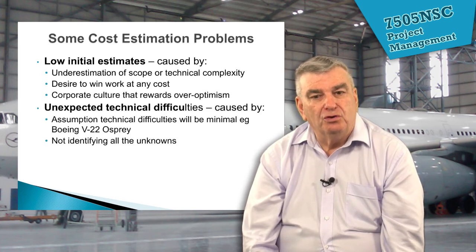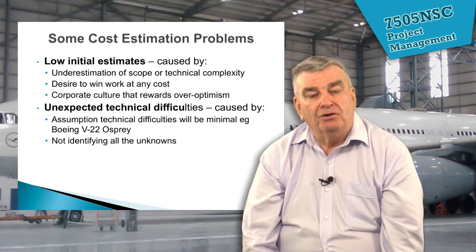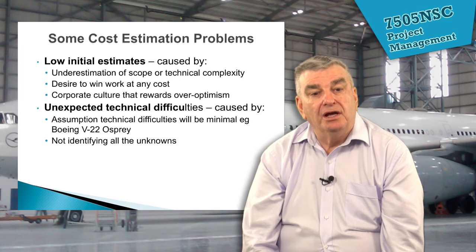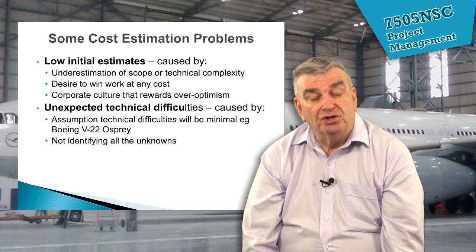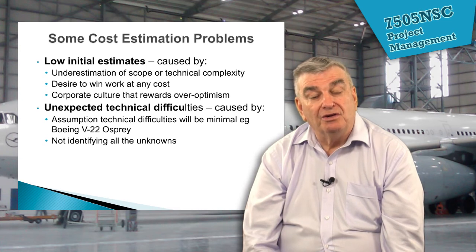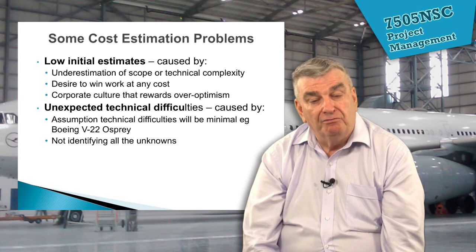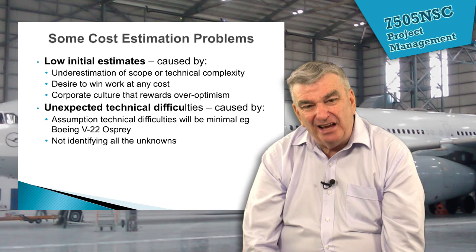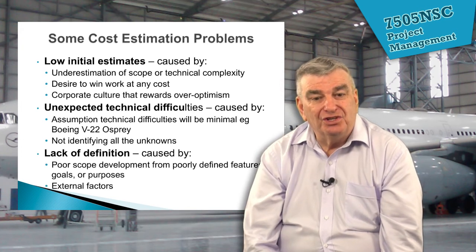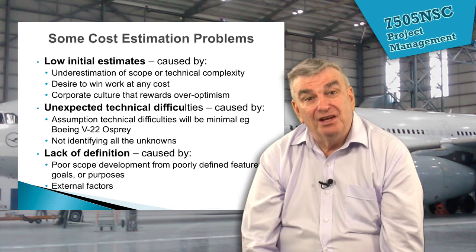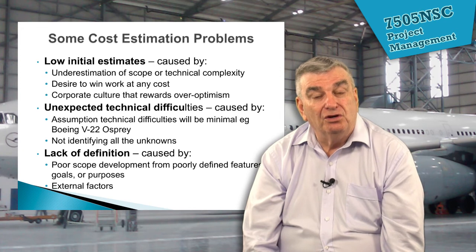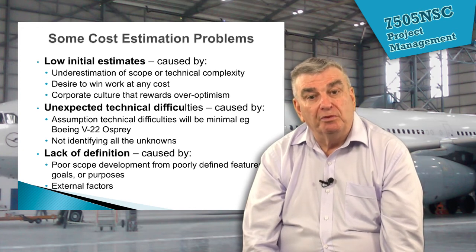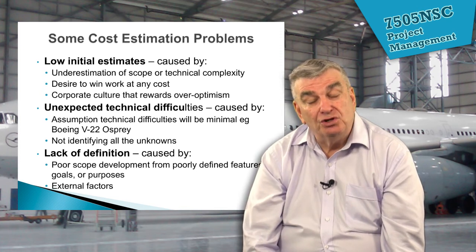There are unexpected technical difficulties. A good example is the Boeing V-22 Osprey aircraft — a vertical take-off and landing aircraft that can rotate the engines and fly at high speed in level flight. Boeing, who developed this in conjunction with other companies, found problems they hadn't expected, especially in tilting the engines, and had a very terrible accident simply because they hadn't realised just how complex it would be. Then there's a lack of definition — the customer doesn't understand the actual work they want done, and combined with that, the contractor may not have done it before. Both are on a learning curve.